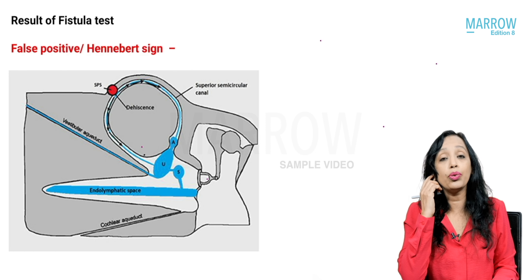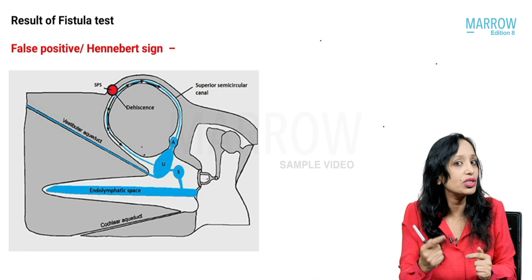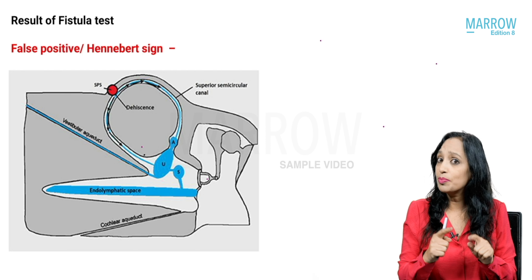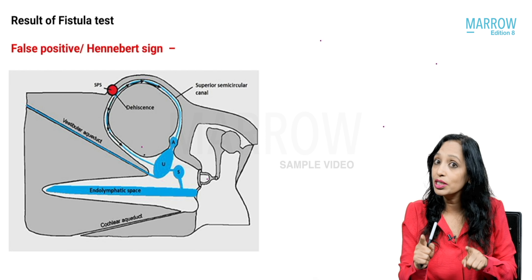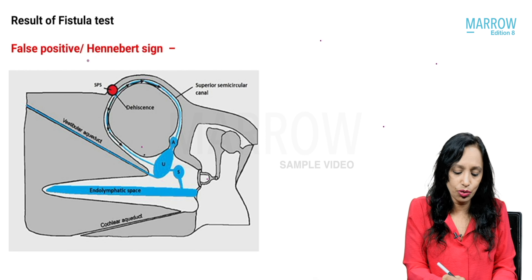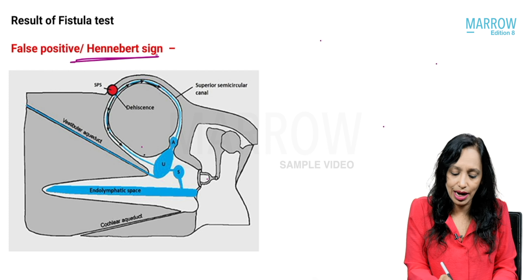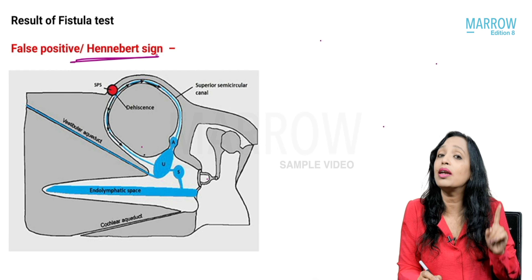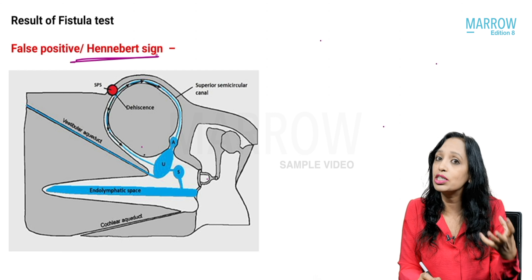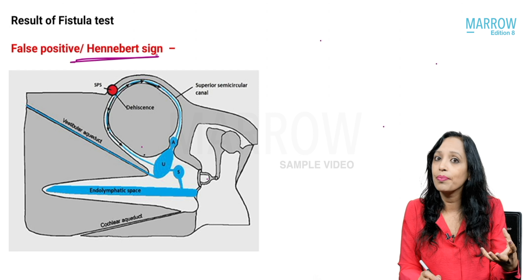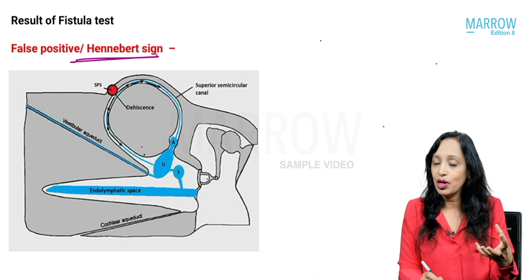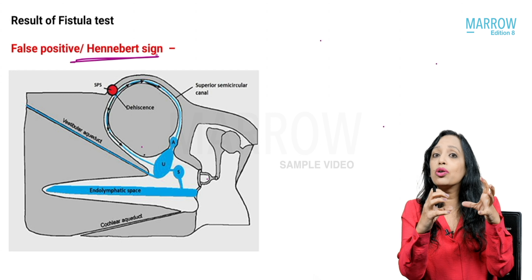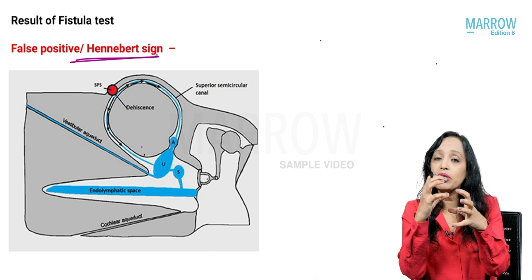It is also possible that a patient has no fistula on the medial wall, yet when you do pressure changes the patient has vertigo. This is what is known as a positive but false — false positive fistula test, also known as Hennebert's sign. This patient does not have a fistula on the medial wall.